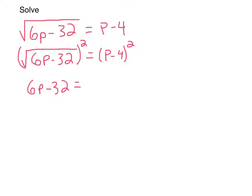Now, if I'm going to square p minus 4, you can FOIL that one if you want to. We'll show you how to do that in another video. But your answer would be p squared minus 8p plus 16.